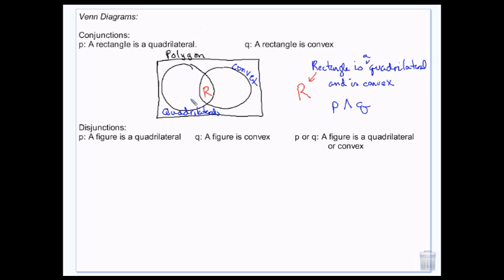Anybody that's just in this part — these are just quadrilaterals, so these are non-convex quadrilaterals, concave quadrilaterals. Everybody that lives over here are convex figures but they're not rectangles — so hexagons, pentagons, basically anything that's not a quadrilateral. That lives outside of the circles is a polygon that's not convex and not a quadrilateral, so out here we might have a star — a star is a polygon but it's not a quadrilateral and it's not convex.